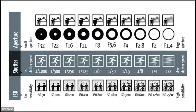Here's a quick chart to give you a sense. With aperture, the bigger the number, the smaller the hole, and the smaller the hole, the less light comes in. As you go from F32 down to F1.4, a bigger hole lets in more light.